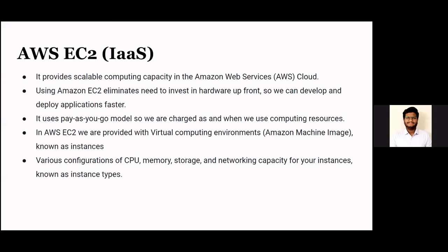AWS EC2 is an infrastructure as a service provider. It provides scalable computing capacity in the Amazon Web Services cloud. Using Amazon EC2 eliminates the need to invest in hardware upfront, so we can develop and deploy applications faster. It uses a pay-as-you-go model, charging only for computing resources used. EC2 provides a virtual computing environment — Amazon Machine Images — known as instances, and for each instance we can choose from various configurations of CPU, memory, storage, and networking capacity.